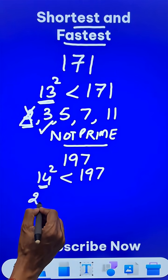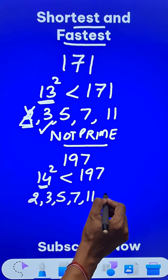And below 14 you find all the prime numbers: 2, 3, 5, 7, 11, and 13.